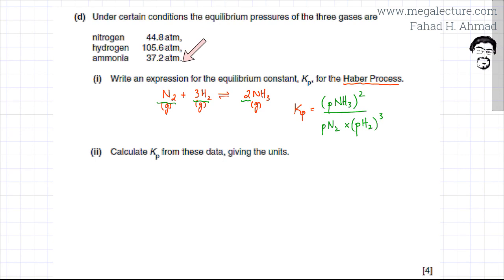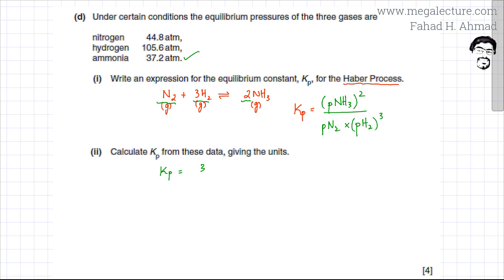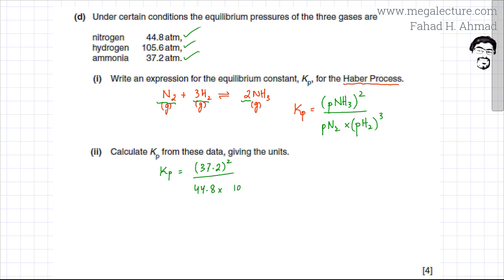Now I need to calculate Kp using the given data. Substituting the values: Kp equals 37.2 squared, divided by 44.8 multiplied by 105.6 cubed.